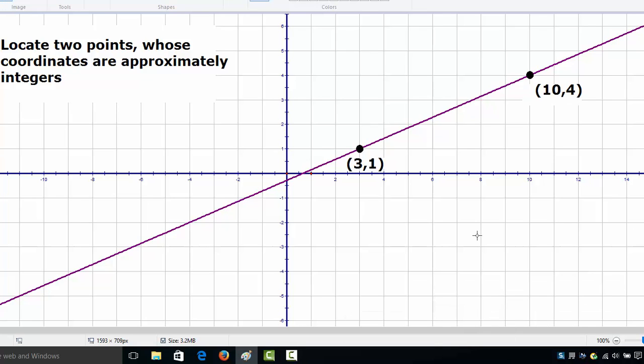So here we have two points: this point here whose coordinates are (3,1) and we got another point whose coordinates are (10,4). Remember you are free to choose any pair of points but these will be a little convenient for calculation.